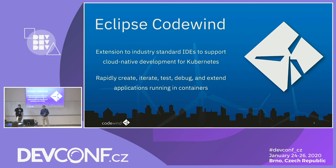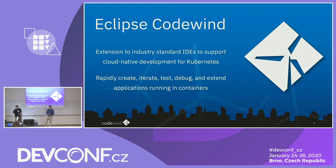Codewind itself is an open source project in Eclipse, starting in February 2019. There's a bit of history — there was a project called Microclimate, which was an IBM internal software that was never open sourced. We later found that many companies were doing different things for cloud native development with no standardized approach. That's why we started up the Eclipse Codewind project.